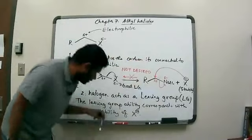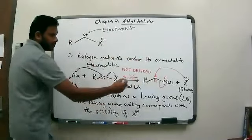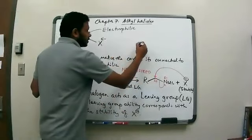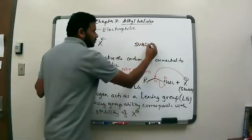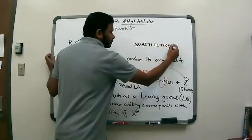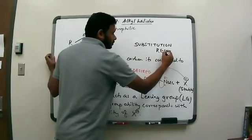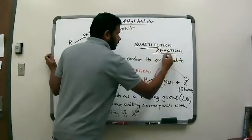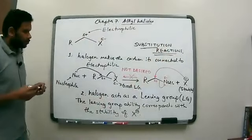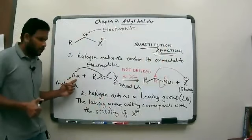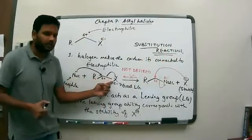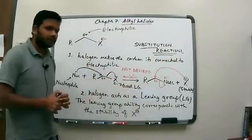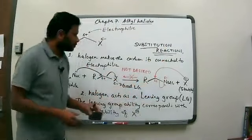This is one possibility for alkyl halide reactions, and these kinds of reactions are called substitution reactions. The nucleophile is substituting for the halogen — it comes in and substitutes for the halogen in the reaction.